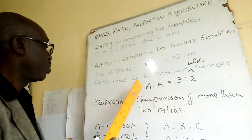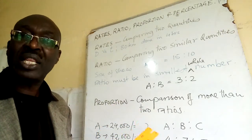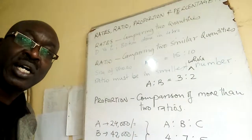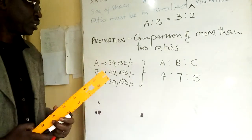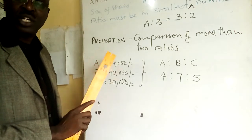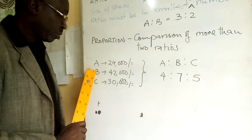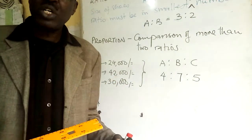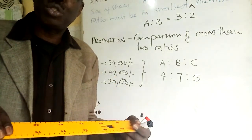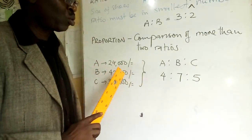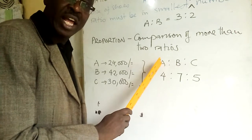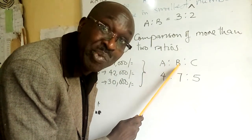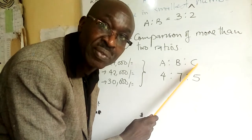Now we finish with proportion — comparison of more than two ratios. An example: Anyango contributed 24,000 dollars in some business, Beatrice contributed 42,000, and Carol contributed 30,000. So what is their contribution proportionally? Contribution of A compared to B compared to C: Anyango, Beatrice, Carol.